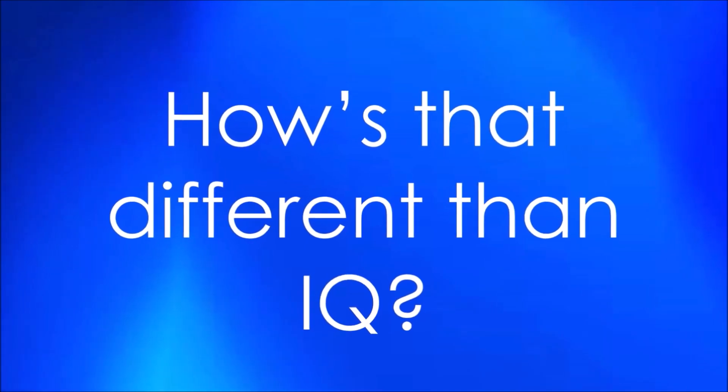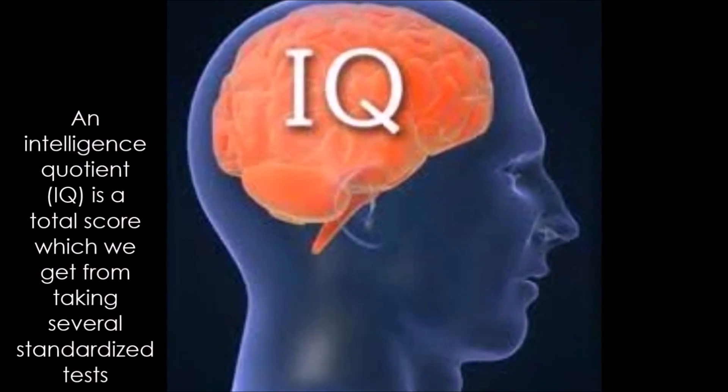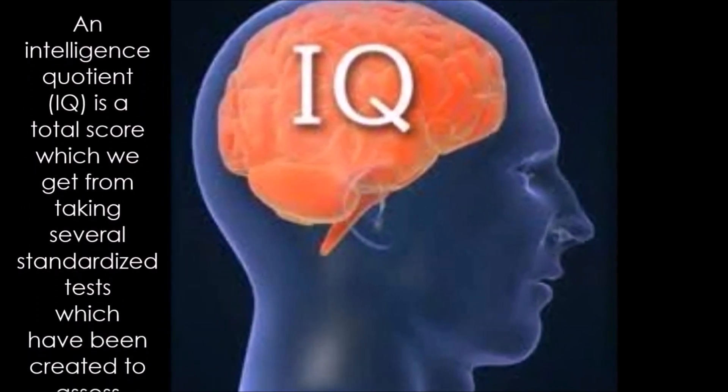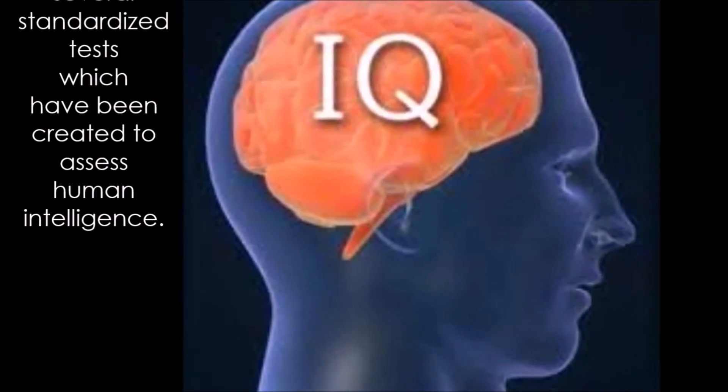How is that different than IQ? What's IQ? An intelligence quotient, or IQ, is a total score which we get from taking several standardized tests which have been created to assess human intelligence. The psychologist William Stern coined the abbreviation IQ for the German term intelligence quotient. It was his term for a scoring method for intelligence tests at the University of Breslau, which he advocated in a book from 1912.